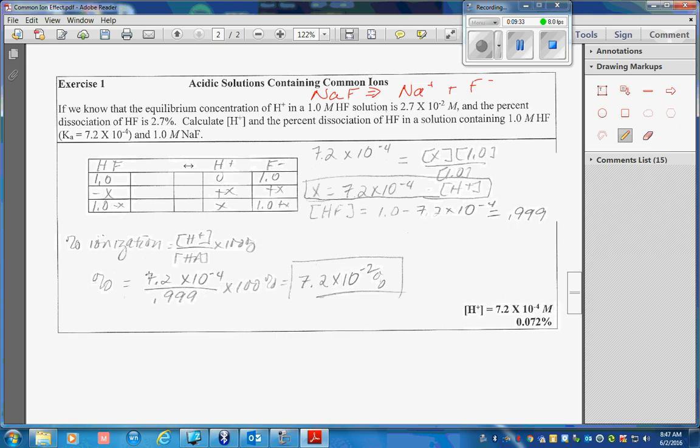I have my hydrogen ion concentration to find the percent ionization. My hydrogen ion concentration divided by the concentration of my acid after dissociation times 100 percent is this.